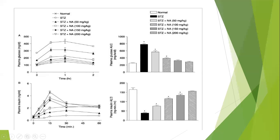For insulin, under normal conditions without any drug administration, the level is between 150 to 200. When streptozotocin is introduced, the insulin level drops to below 50. However, when streptozotocin is given along with nicotinamide and doses are increased, the insulin level in the body also increases.